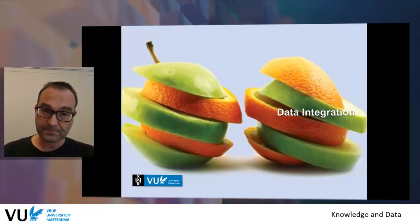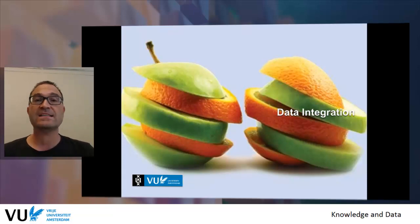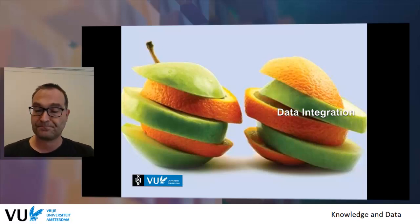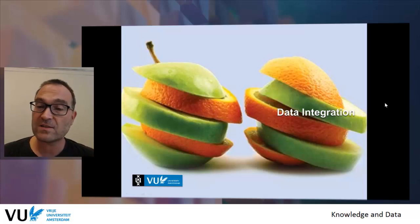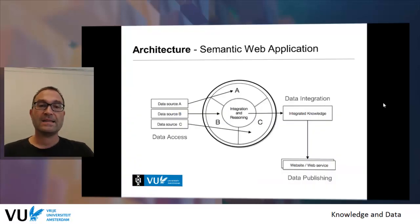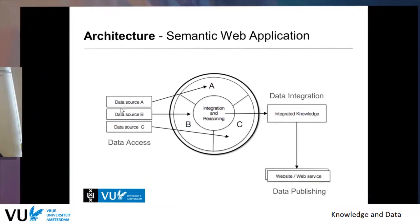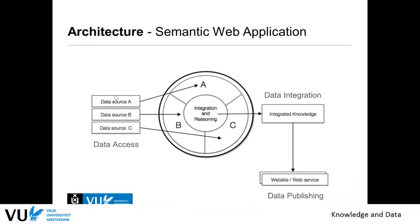Data integration is really about taking two different data sets that have been used for different purposes and integrating them into one thing for your specific application — but sometimes it's also about building new data sources. The goal is to have data access to existing and maybe our own data sources, integrate them, reason over them, and use this integrated knowledge for data publishing on a website or as a web service.